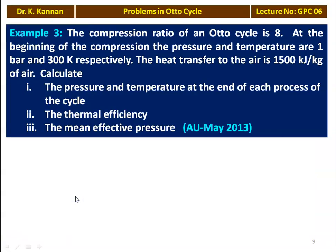Example number 3 from the question paper May 2013. The compression ratio of an Otto cycle is 8. At the beginning of compression, the pressure and temperature are 1 bar and 300 Kelvin respectively. The heat transfer to the air is 1500 kJ/kg. Calculate the pressure and temperature at the end of each process, thermal efficiency, and mean effective pressure.